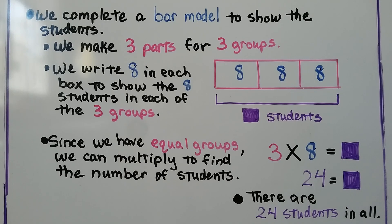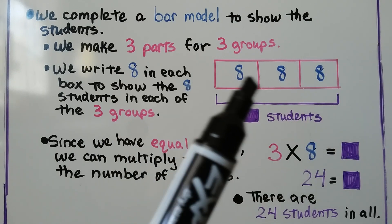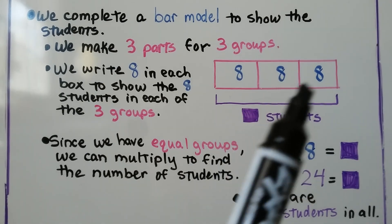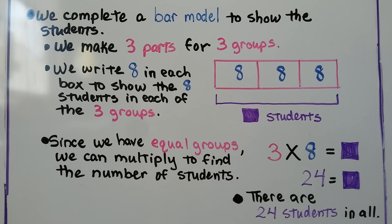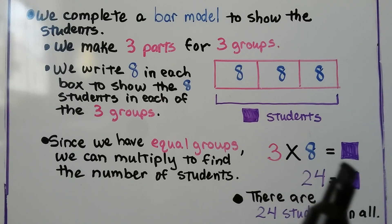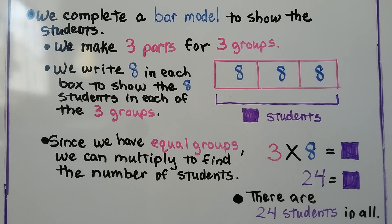We complete a bar model to show the students. We make three parts for the three groups, and we write an eight in each box to show the eight students in each group. It's going to equal this purple square — the total students in all. Since we have equal groups, we can multiply. Three times eight equals the purple square. Three times eight is 24.